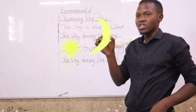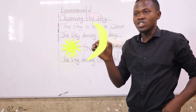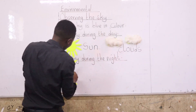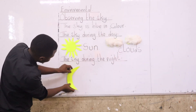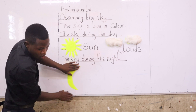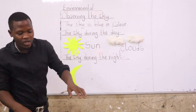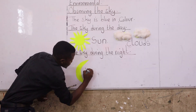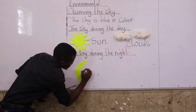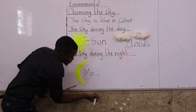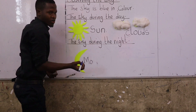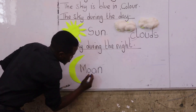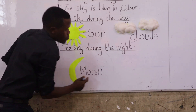So when you go outside during the night and look at the sky, you will be able to see the moon. And the moon gives us light during the night. So during the night, if you go outside, you will see the moon. How do you read the word moon? M-O-O-N. Moon.